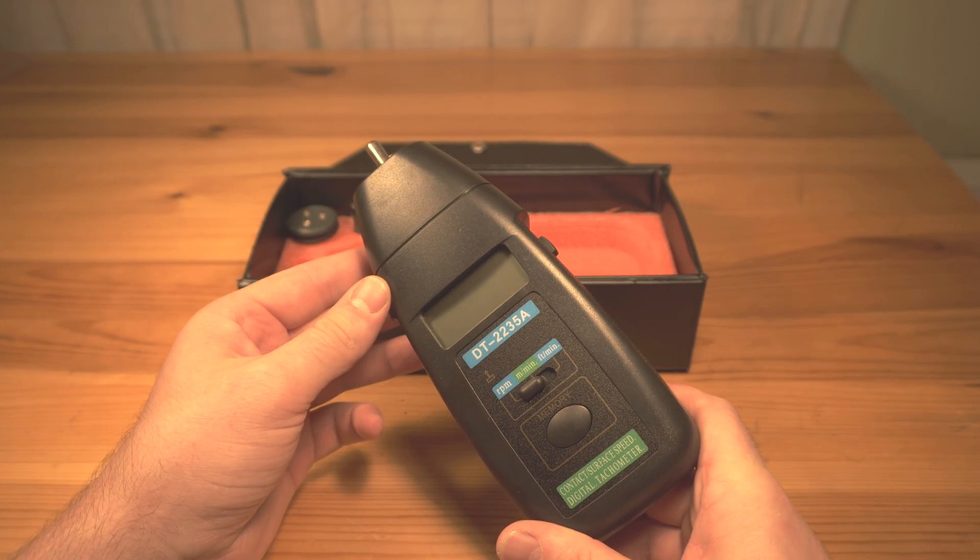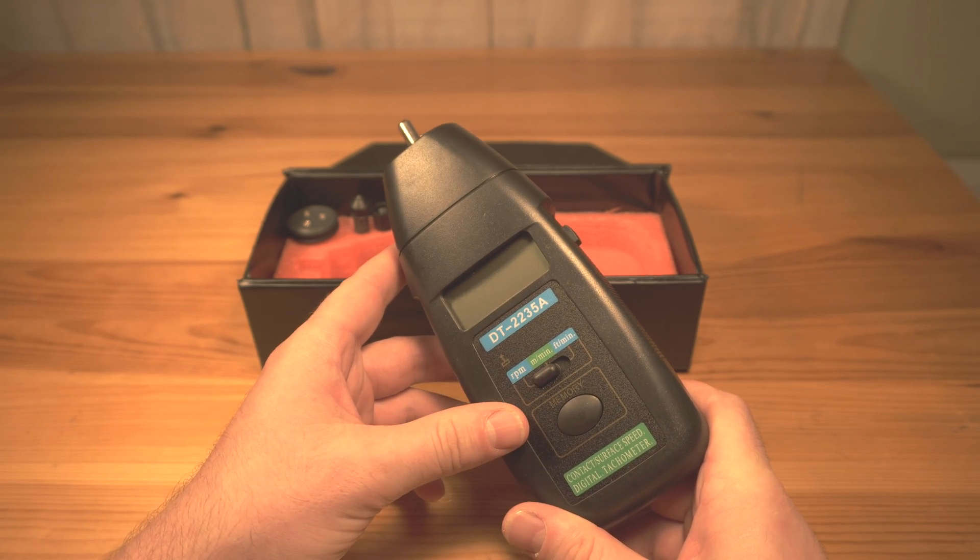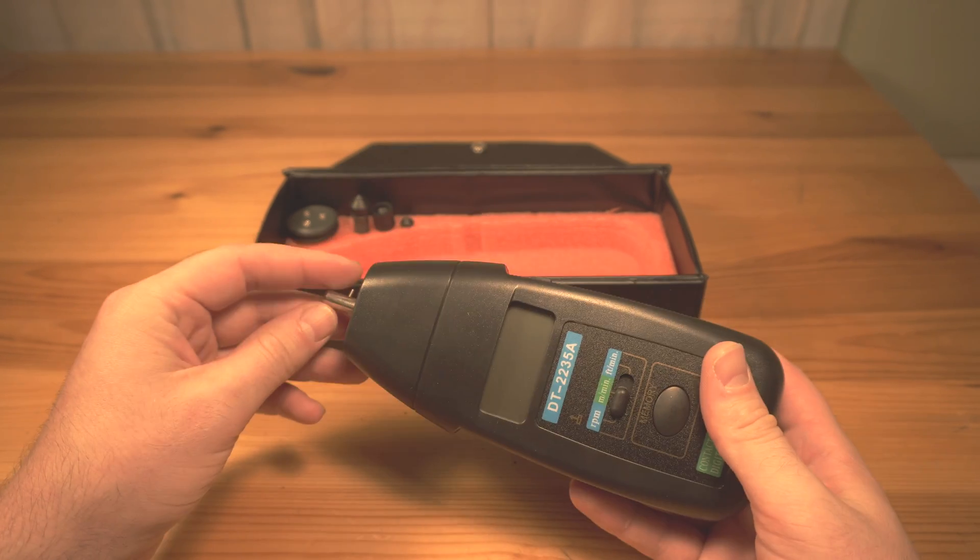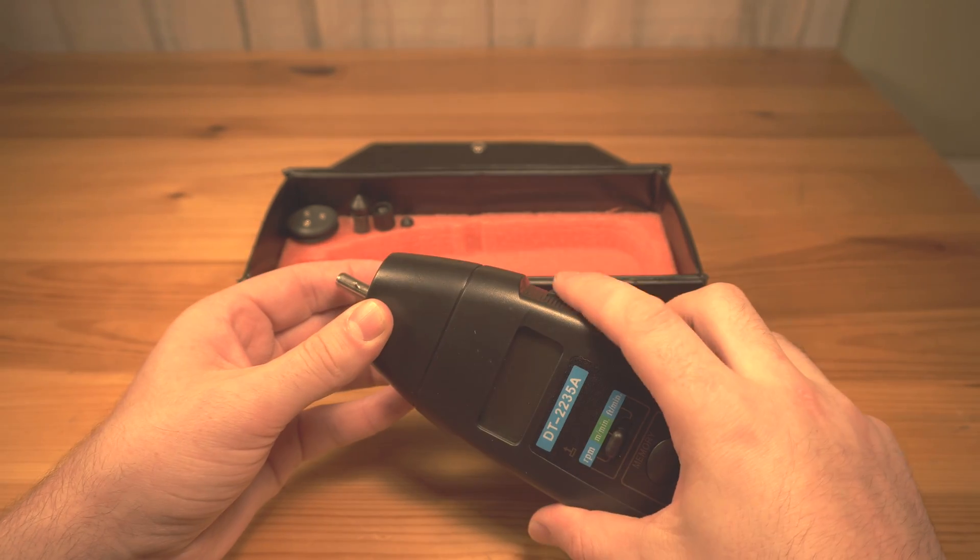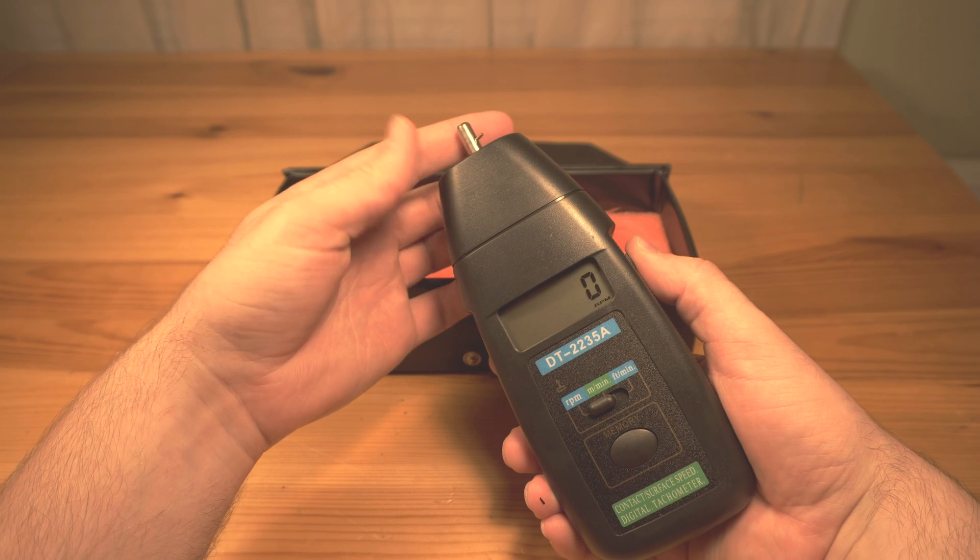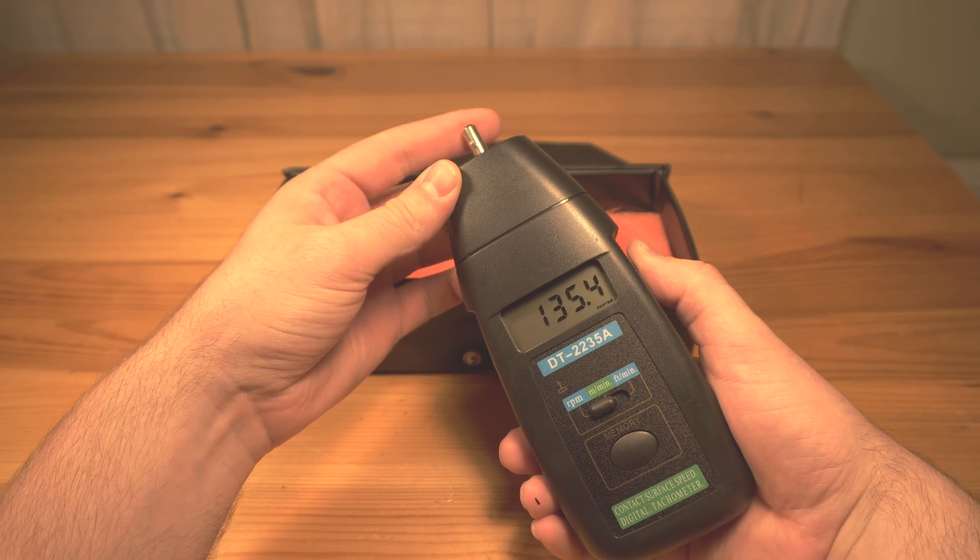Now, the way the device works is super simple. It just measures RPM, meters per minute, or feet per minute. Basically the way it works is you have to hold the button down over here. You hold it down and you start rotating. As you can see, I'm just rotating it with my finger and it's showing me the RPM.